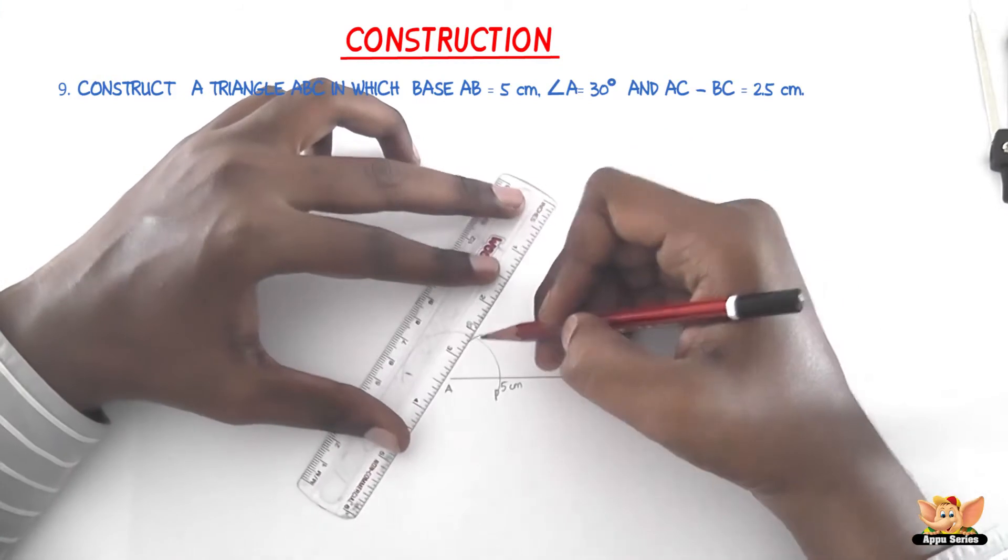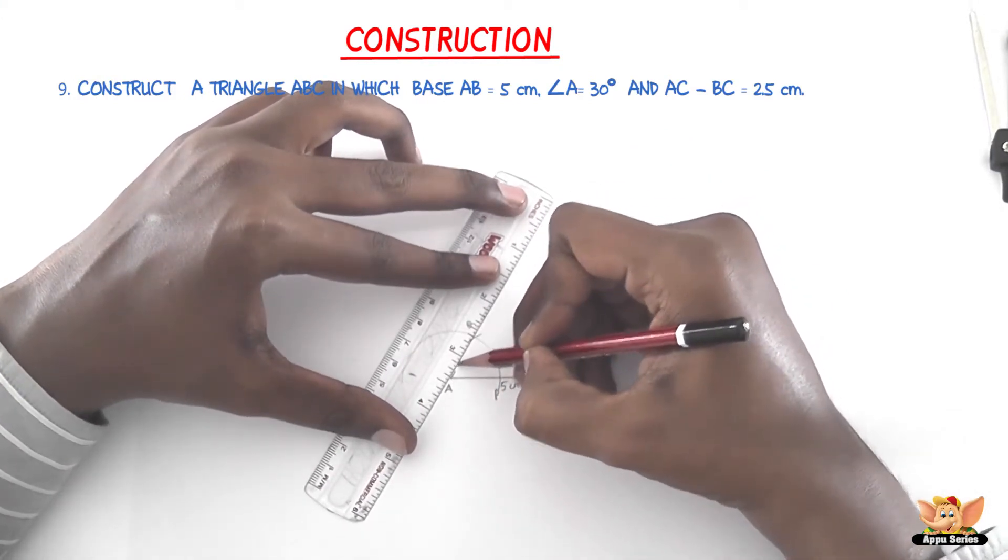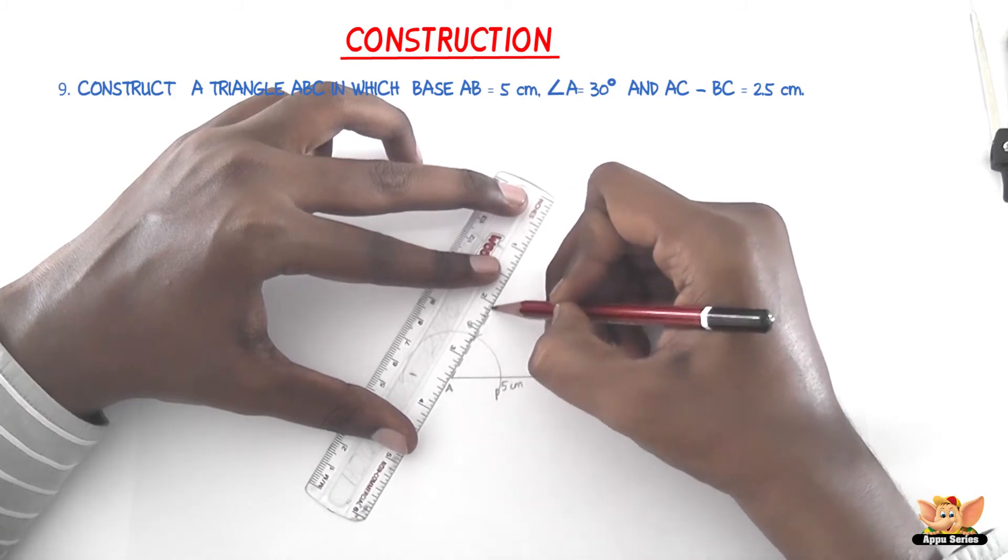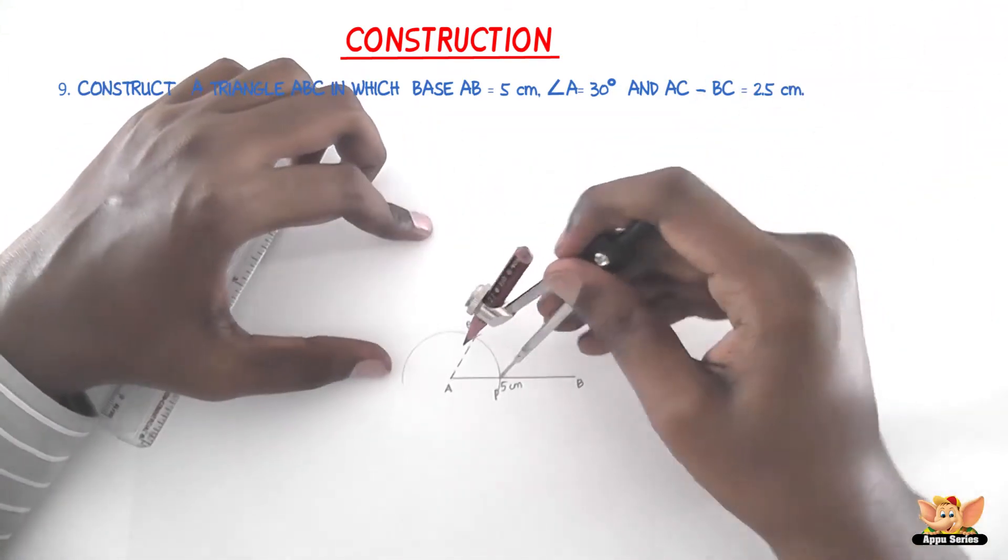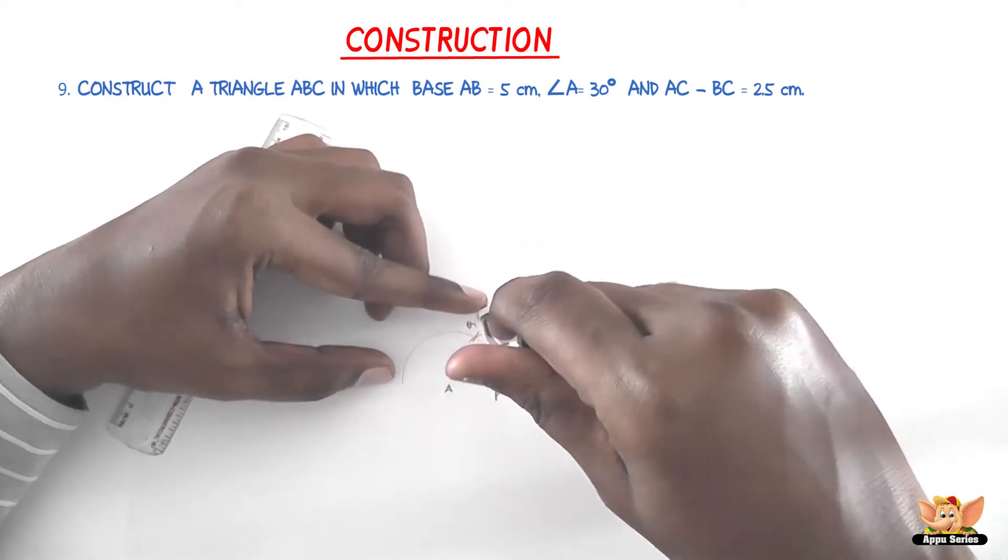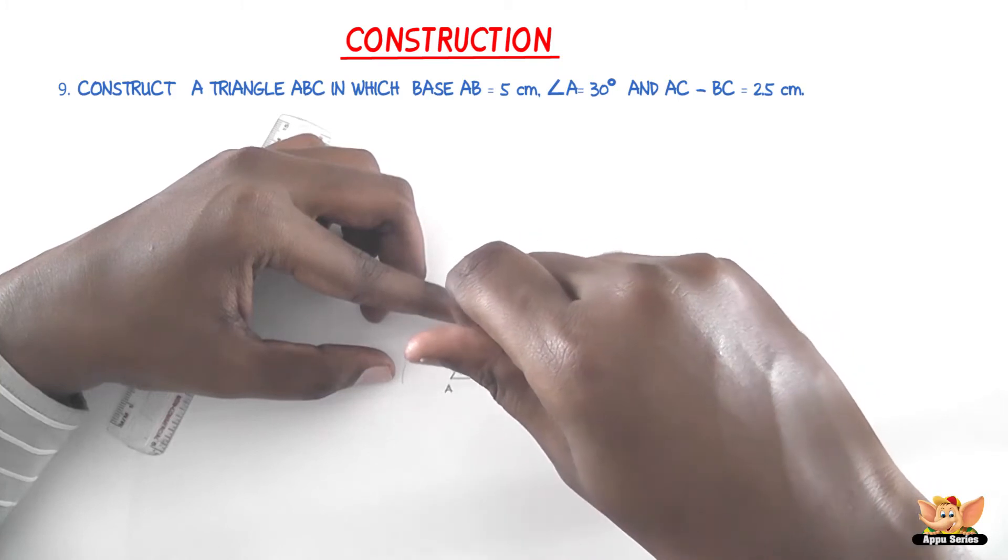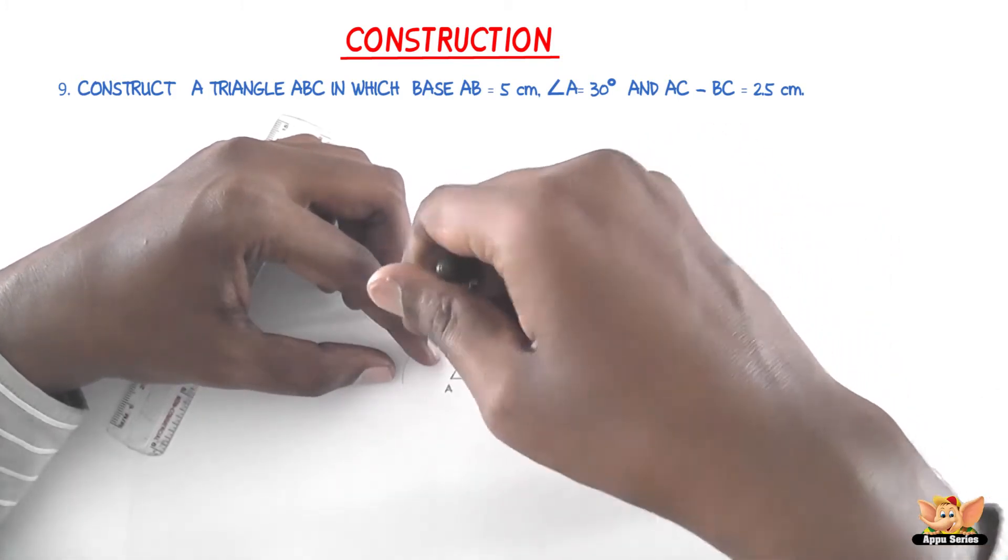Now join this using dotted lines because we don't need 60 degrees, we just need it to get 30 degrees. Now bisect this with P as center and radius more than half of the arc PQ, draw an arc. And with Q as center and the same radius, cut the arc that we just drew.